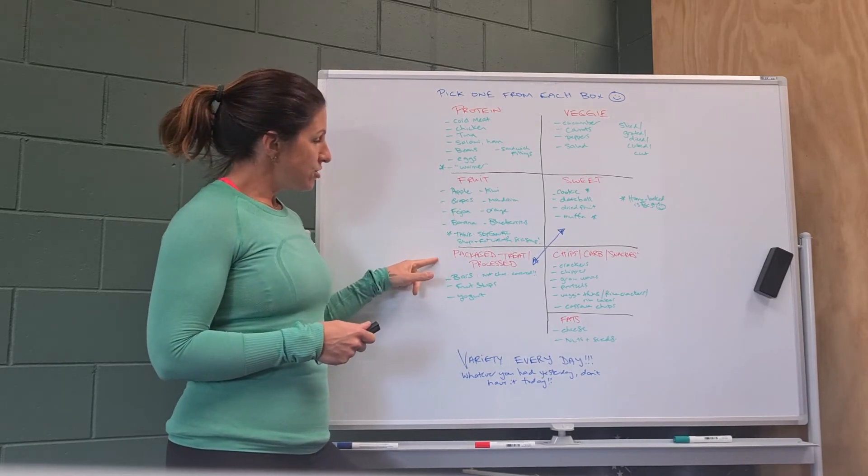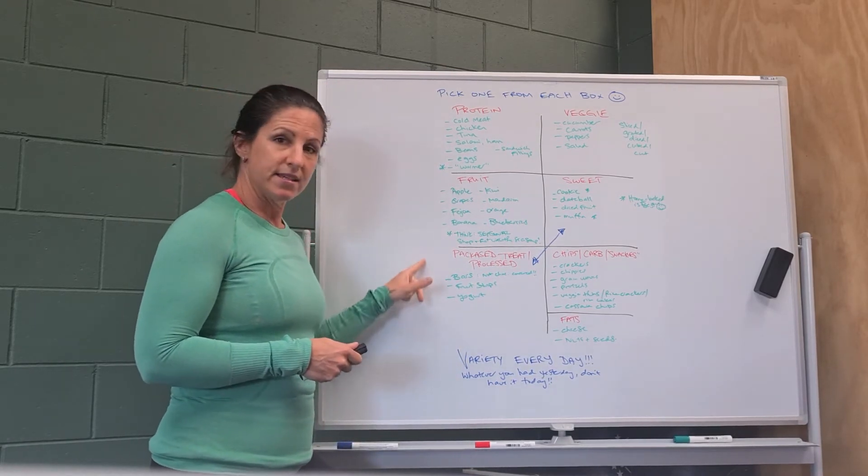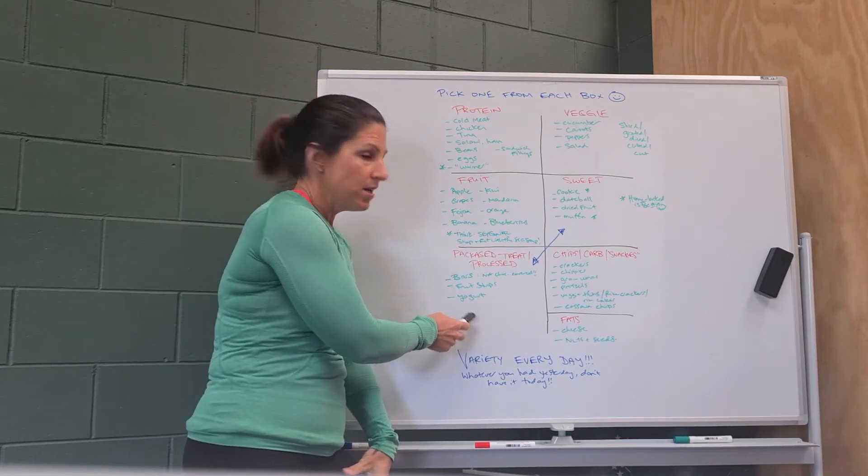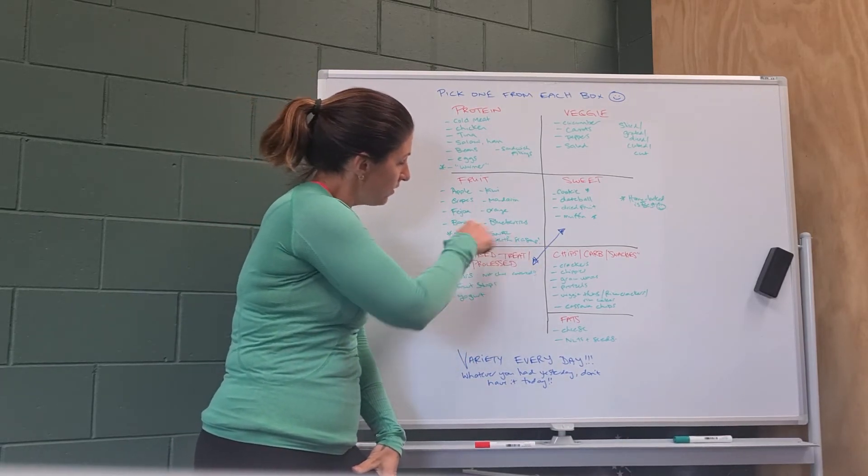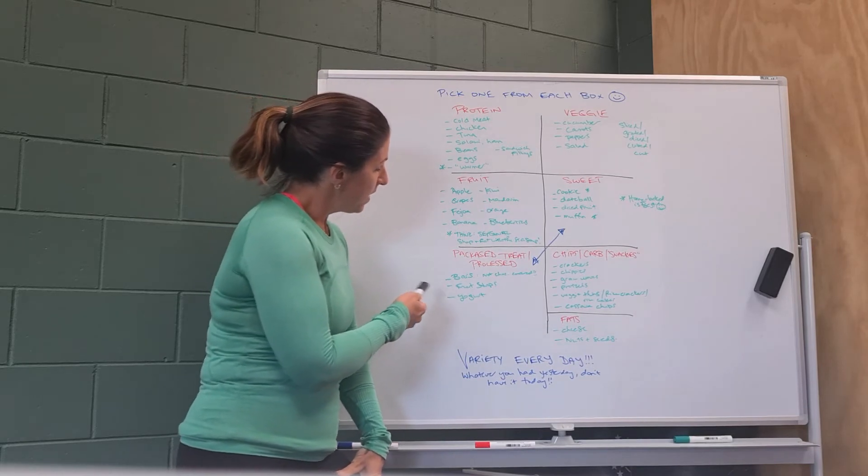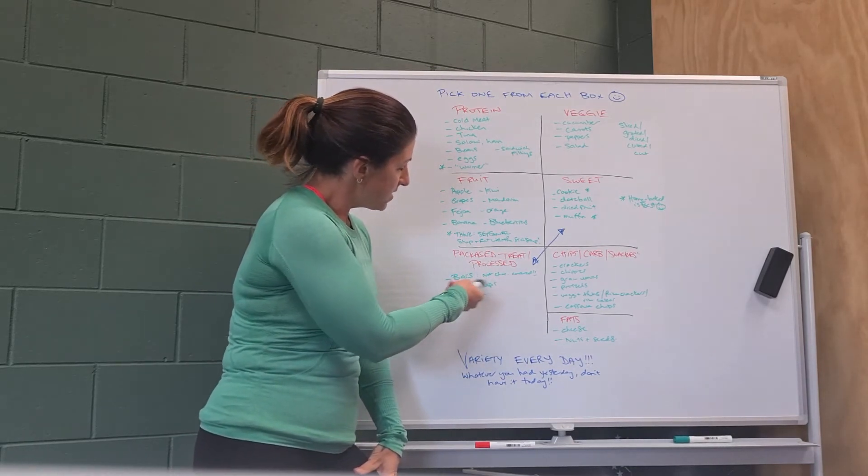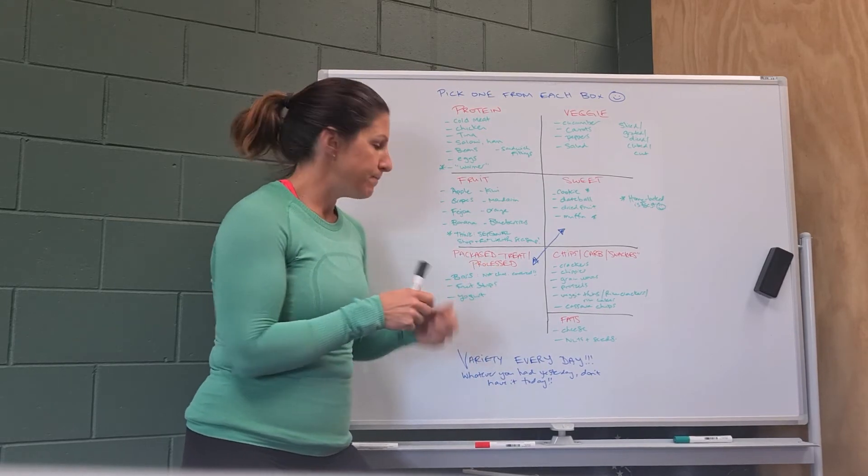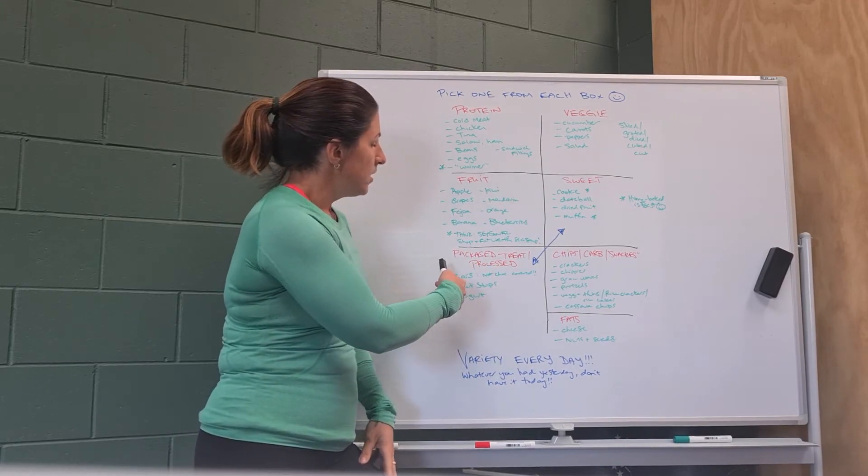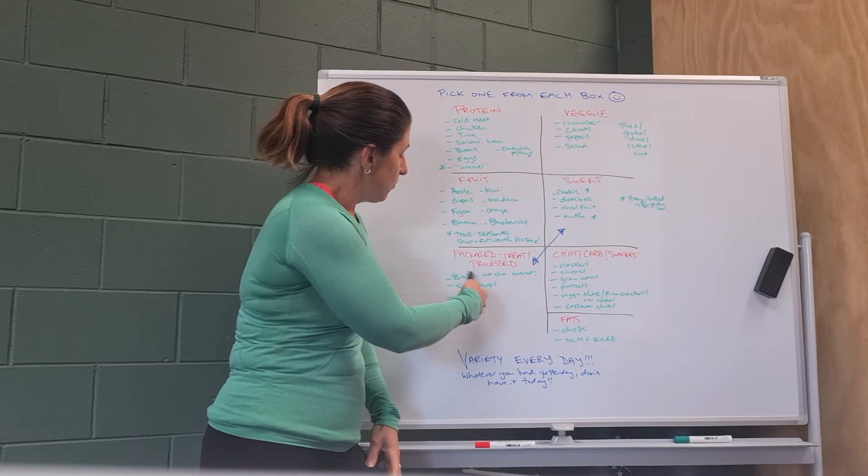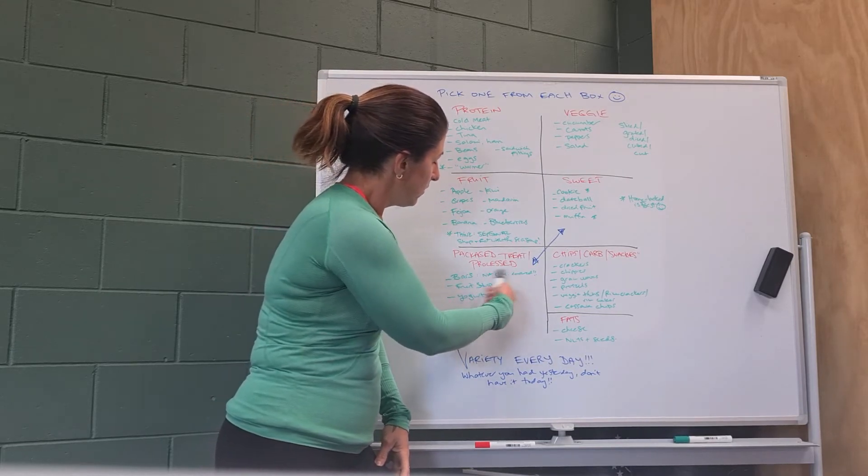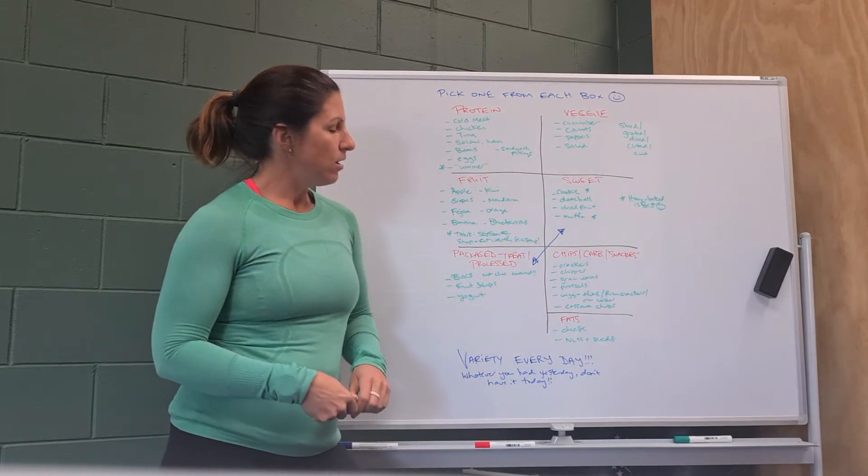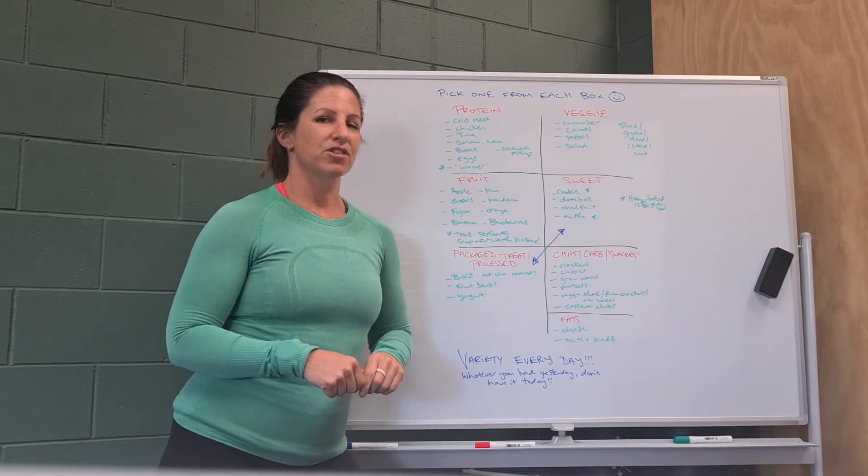Then I have here packaged treats and processed foods. So this actually includes yogurt. In this world here, I would consider it to be things that are processed that have lots of sugar in them. So those fruit strips, a bar, yogurt, those things. But also thinking here about not having a bar that's covered in chocolate.